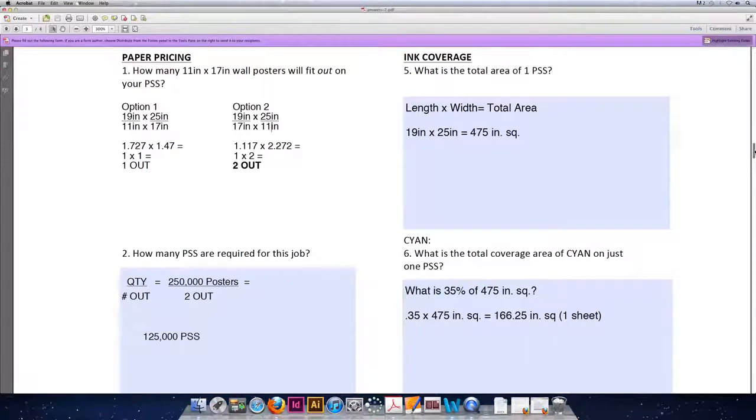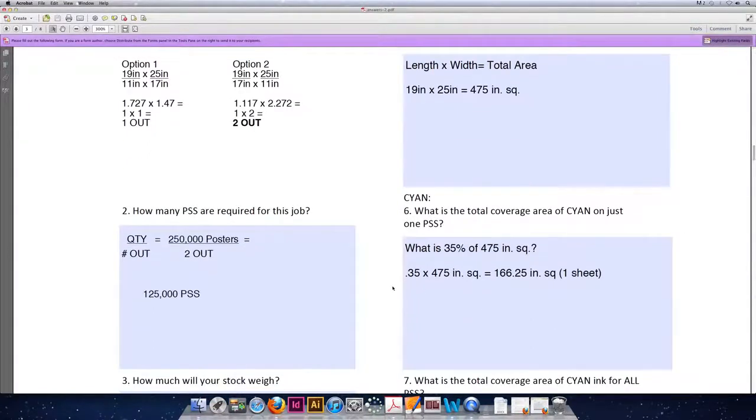From there, question six asks, what is the total coverage area of just the cyan for one press-sized sheet? Cyan, per our problem description, covers 35% of the press-sized sheet area. So the question we have to ask ourselves is what is 35% of 475 square inches?